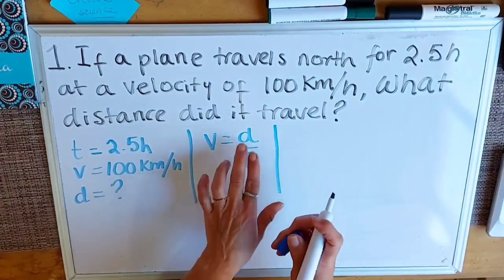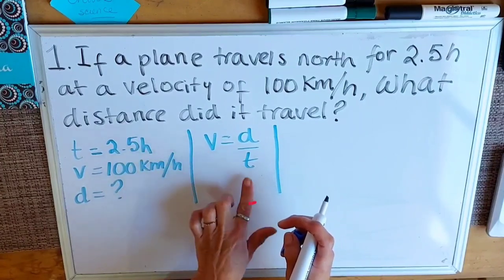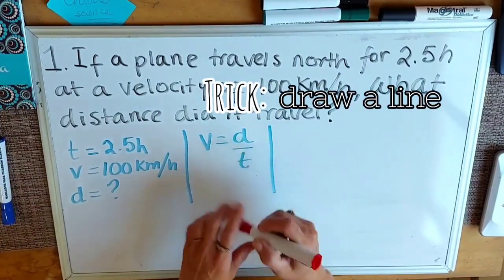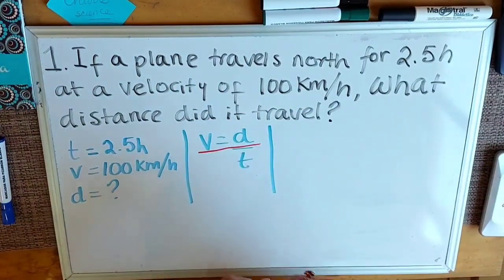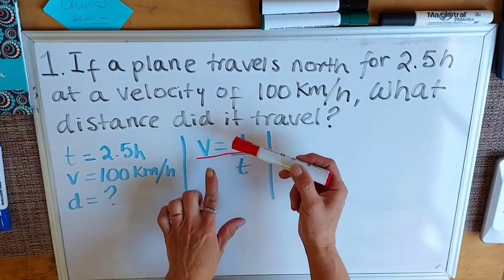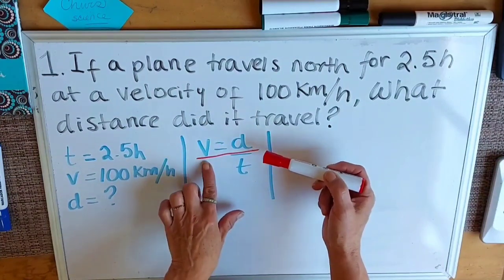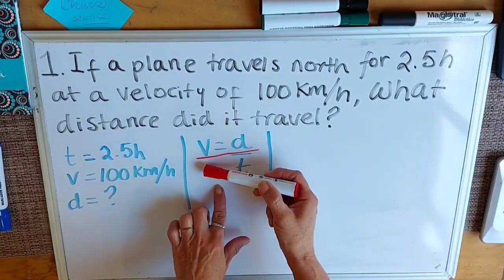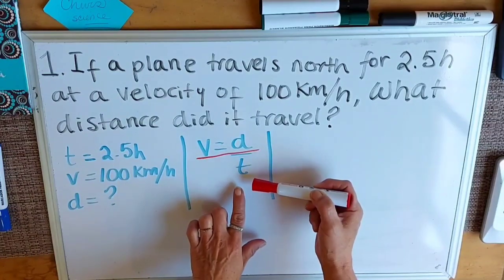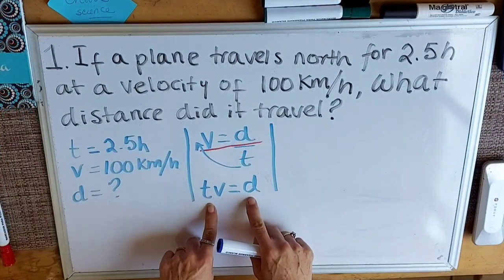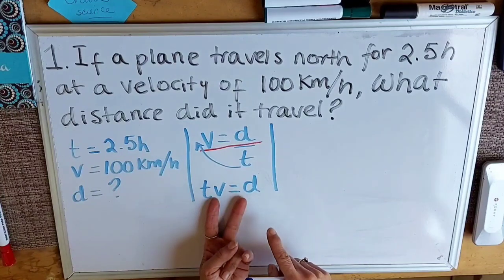Because we need distance alone, we are going to pass time to the other side of the equation. To do that we are going to use a little trick — we are going to draw an imaginary line here. If you want to move something from one side of the equation to the other, just look at the line. If the variable is on the top of the line, move it to the bottom on the other side, and vice versa. In this case we need to move time to the top of the other side, leaving distance alone.